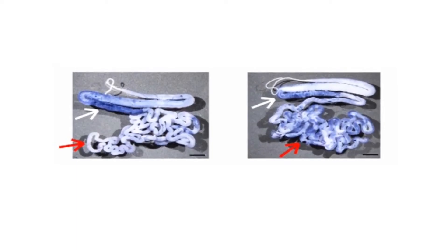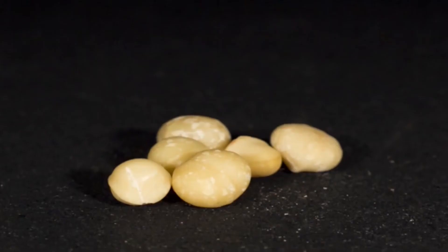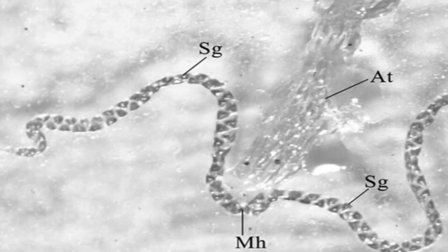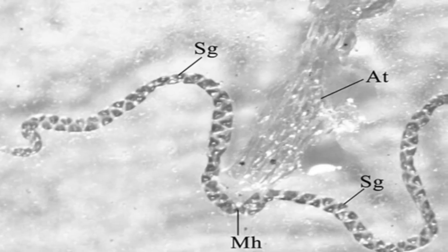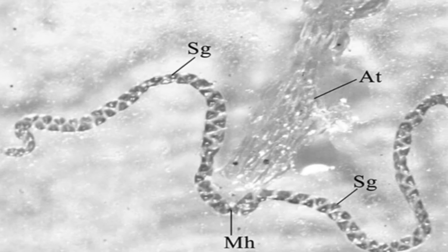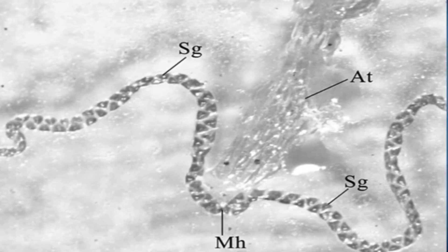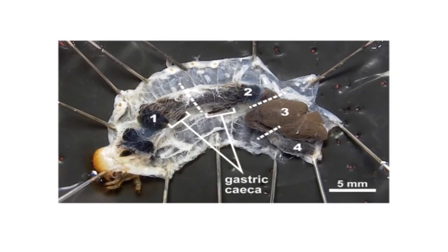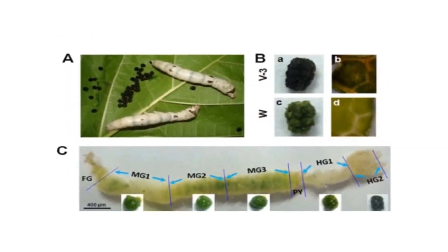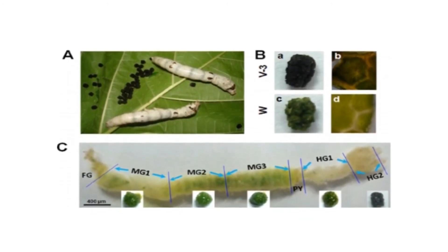The silk gland of Bombyx mori is a typical exocrine gland secreting large amounts of silk proteins. It is a paired organ consisting of modified labial salivary glands located at the two lateral sides under the alimentary canal. Each gland is basically a tube made up of glandular epithelium with two rows of cells surrounding the lumen.